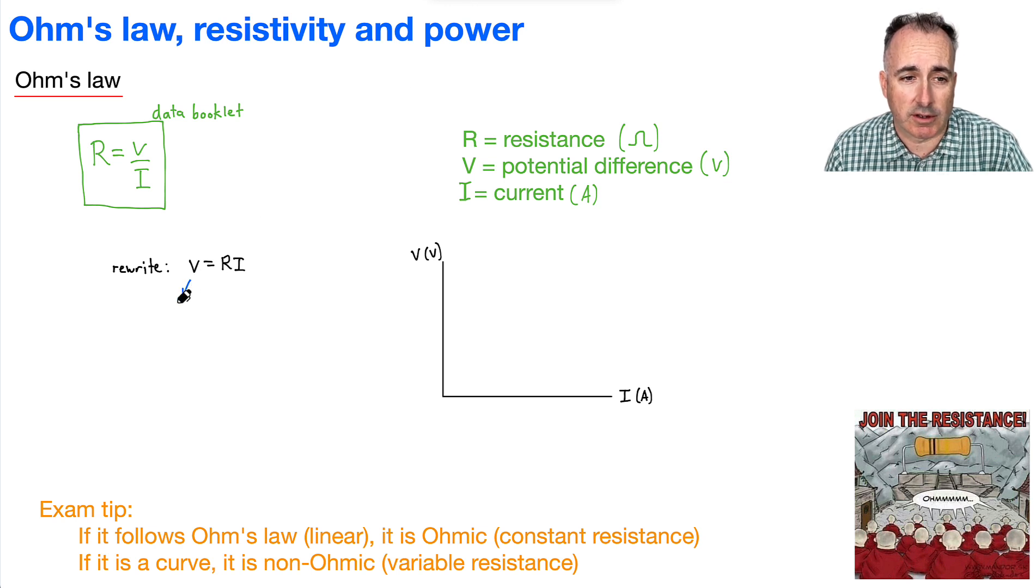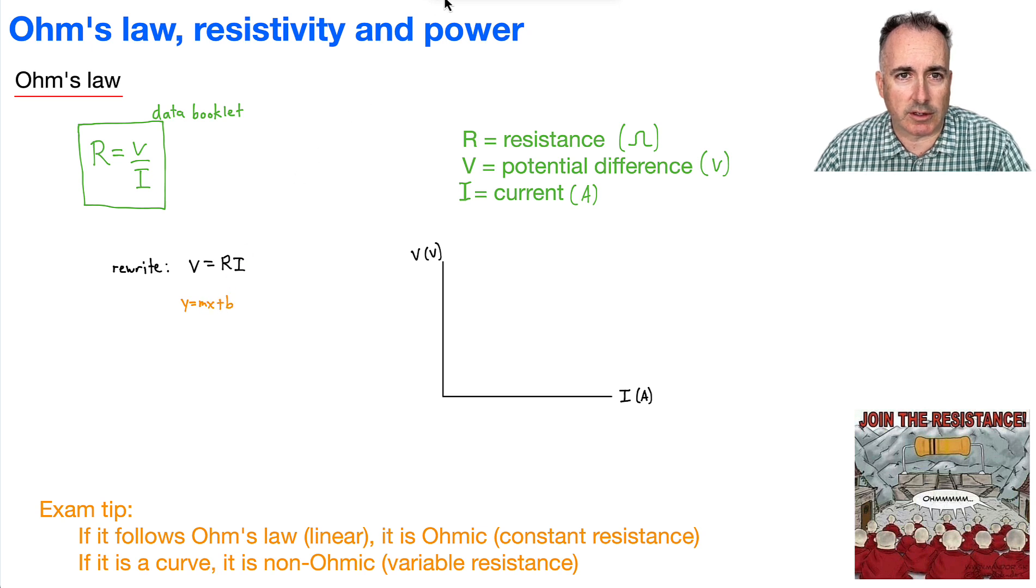And if we look at this one right here then, let's do something called linearization. In other words, if we do this one here, this is like a linear equation. Do you remember linear equations here, how they go? Remember something that goes like Y equals M X plus B, like a linear equation. Well, then this one right here would be the Y value, that would be V. And this right here, I, that would be the X value. And that means this right here then would be the gradient.